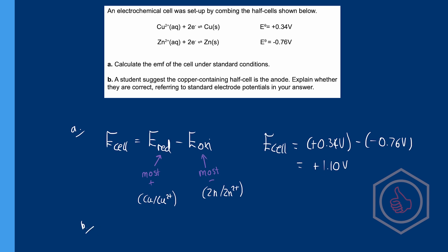On to part B. A student suggests the copper-containing half cell is the anode. Explain whether they are correct, referring to standard electrode potentials. In electrochemistry, the cathode is always the electrode where reduction takes place, and the anode is always the electrode where oxidation takes place — regardless of whether you have a voltaic or electrolytic cell. So if the copper is the anode, that would mean the copper is oxidised. But copper is the more positive value of the two, so copper will be reduced — meaning copper is the cathode and zinc is the anode.